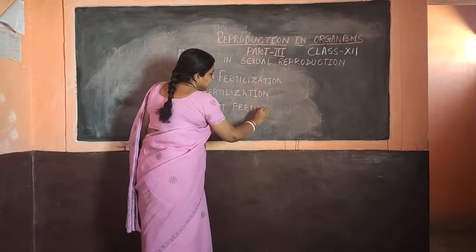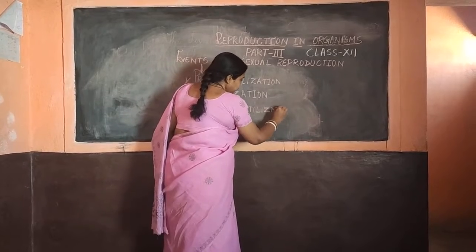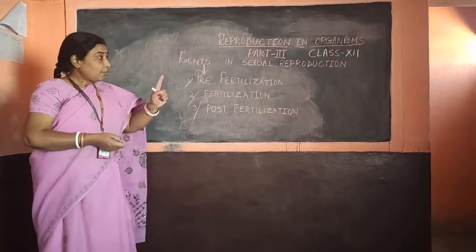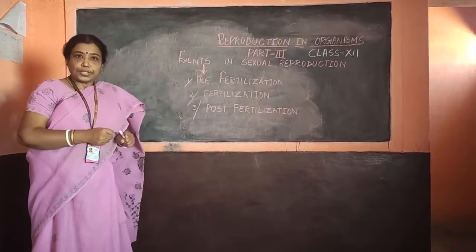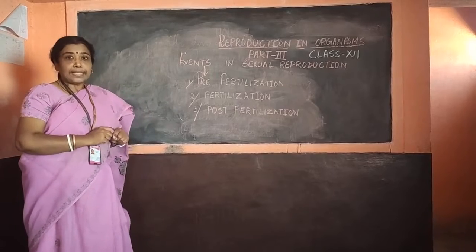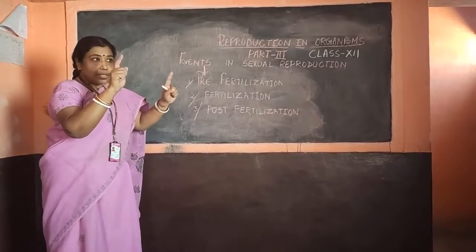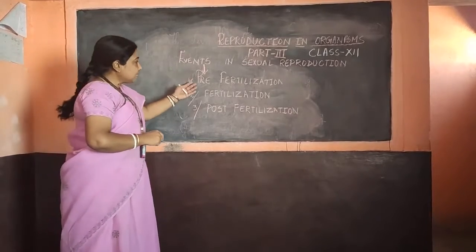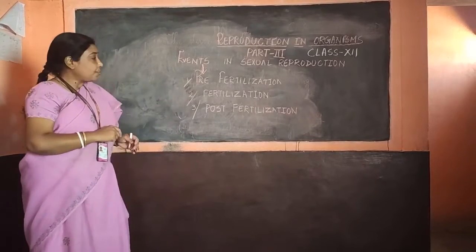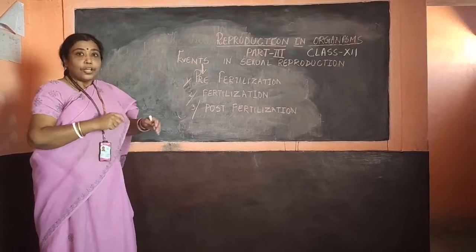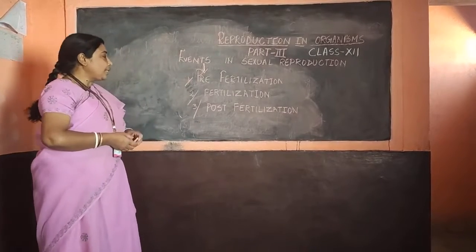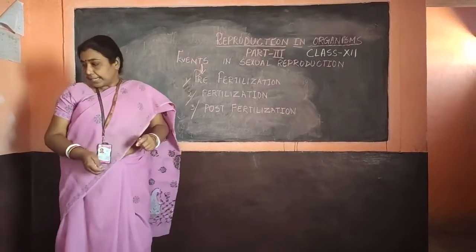When any event takes place, we need to do some preparations for it, and after the event gets over, we need to do something else. So the event is not conducted all of a sudden — it needs certain preparation. And after the event gets over, certain things need to be done to make it happen successfully. So today we are going to deal with the pre-fertilization phase.